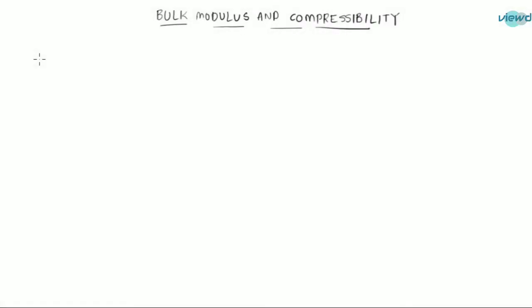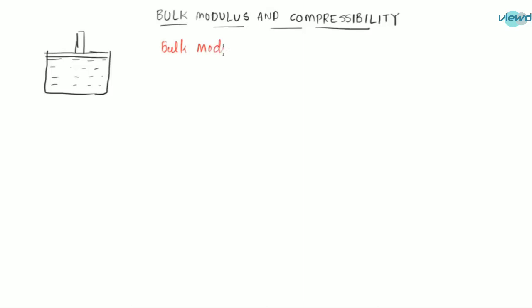In this video let us see another property called bulk modulus and also compressibility. So what is bulk modulus? Let us take a container with some fluid filled in it. In order to produce a unit volumetric strain, how much pressure needs to be raised is called bulk modulus. Bulk modulus is represented with K and it is the pressure needed per unit volumetric strain. Volumetric strain is change in volume divided by initial volume.